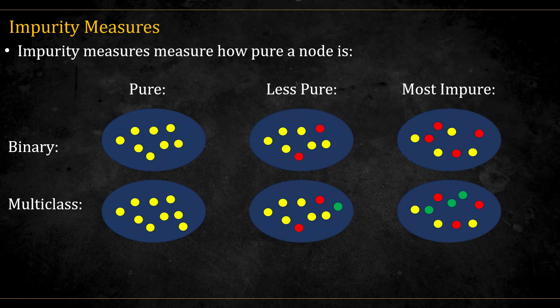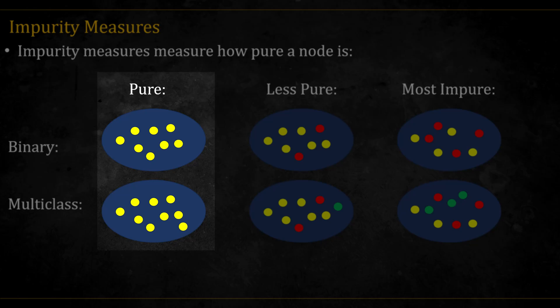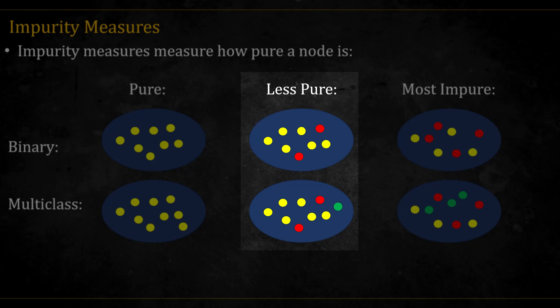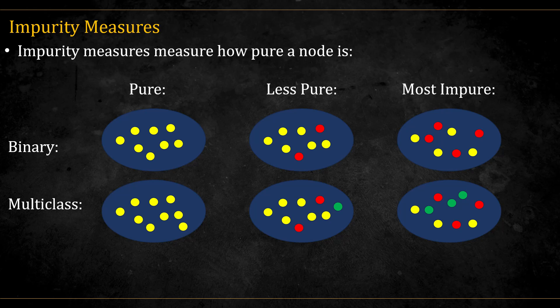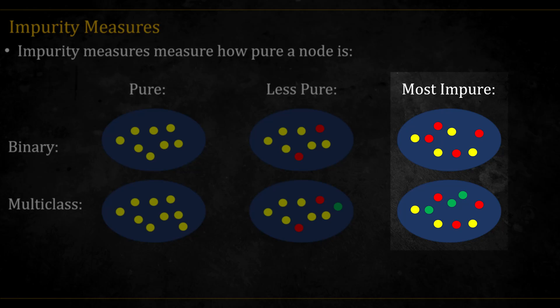Impurity measures or coefficients are used for classification, and they measure how pure a node is. Here is an example for both binary and multi-class classification. On the left side, you see pure nodes, nodes that contain only one class without any mixing with the other classes. In the middle, you can see nodes that are less pure. They have a majority of one class, here the yellow balls, but still have a little bit of other classes in them as well. On the right, you see the most impure nodes. They are equally mixed between the different classes.